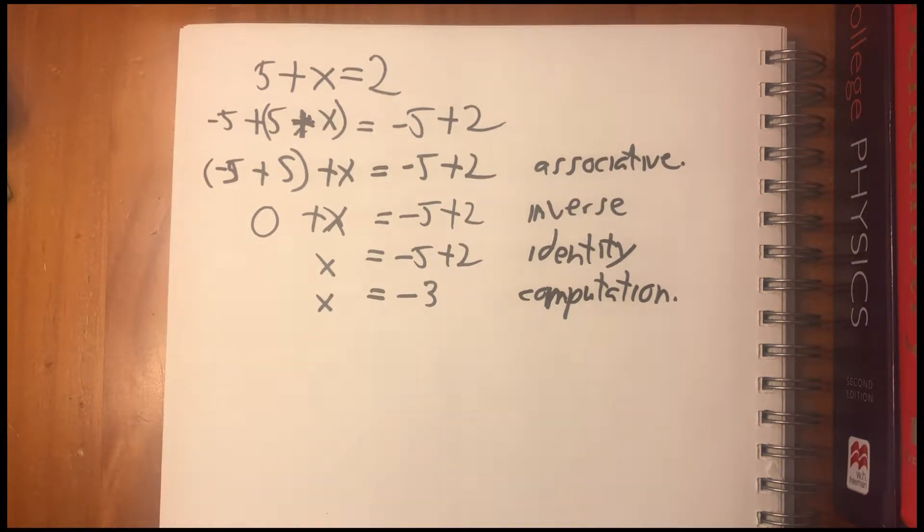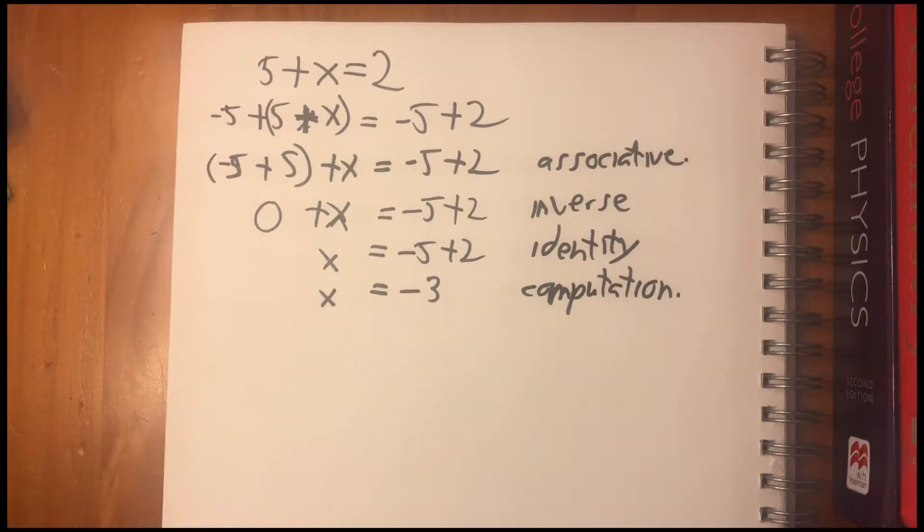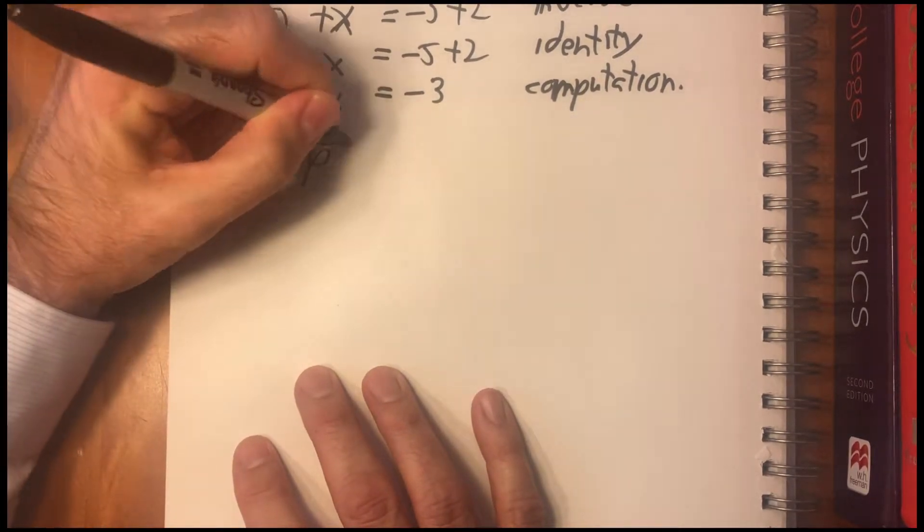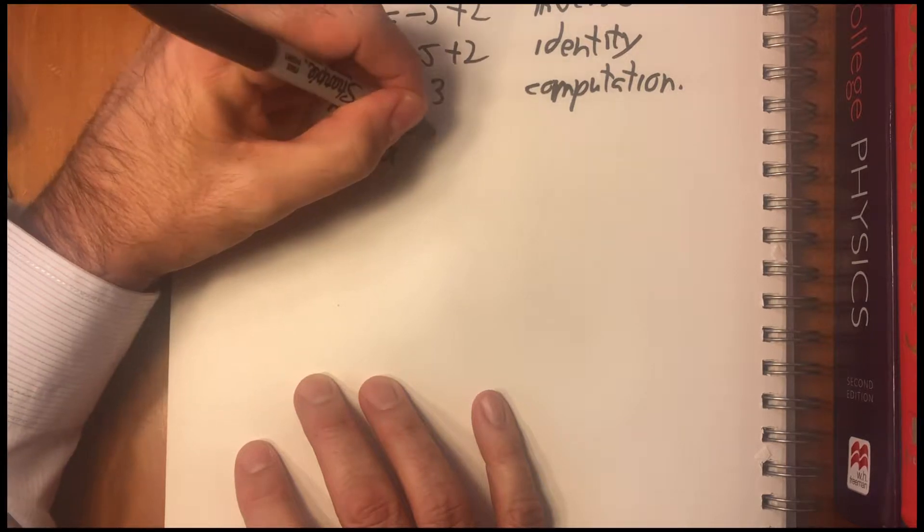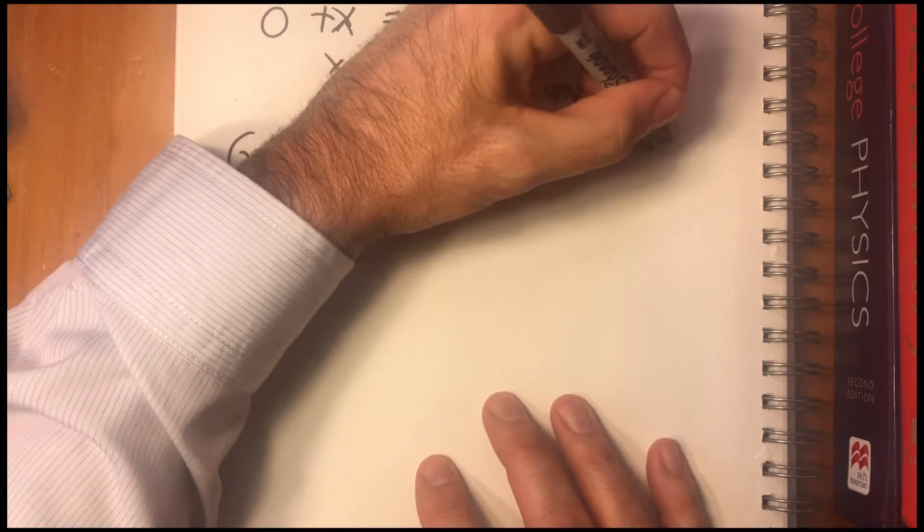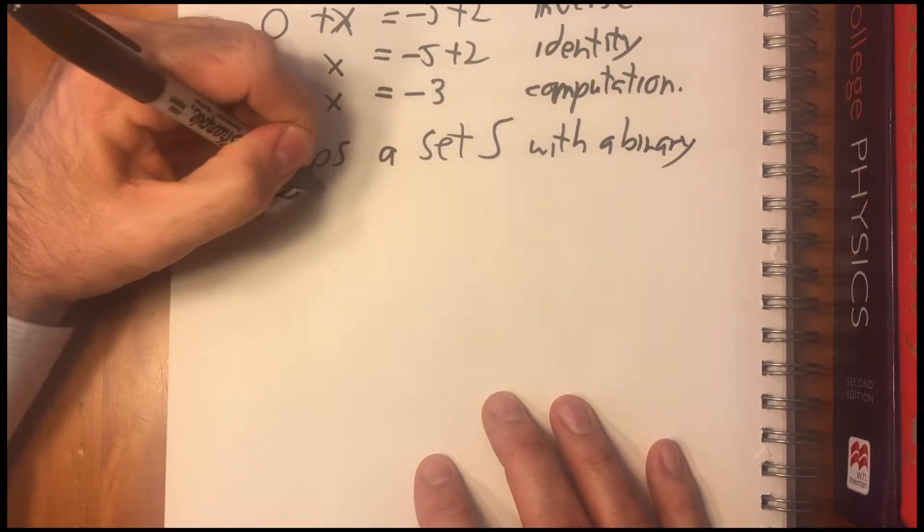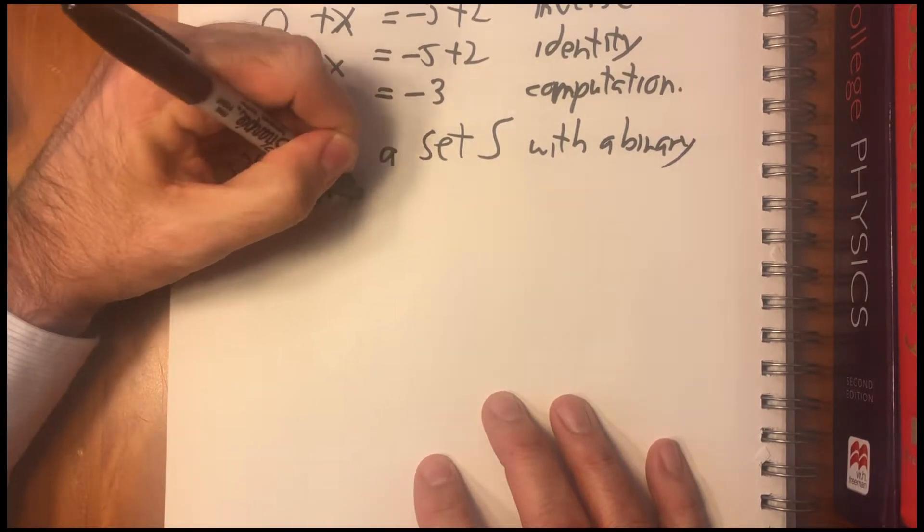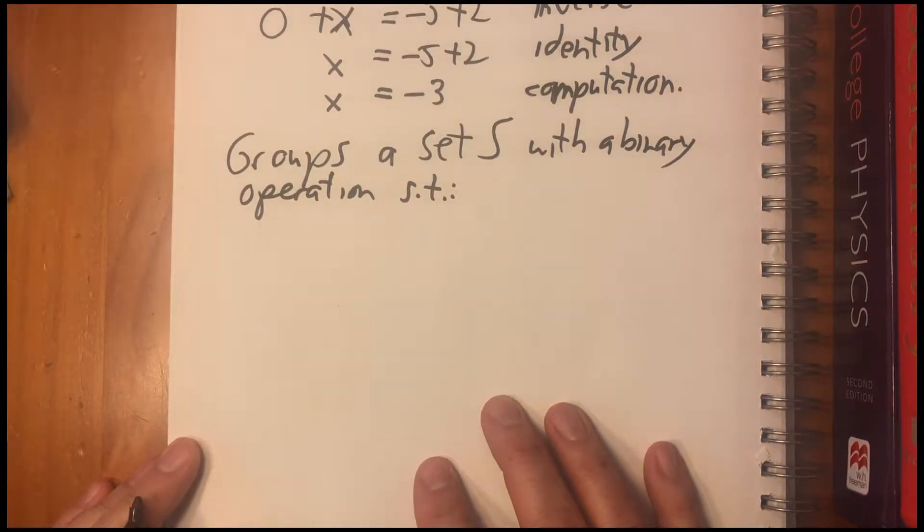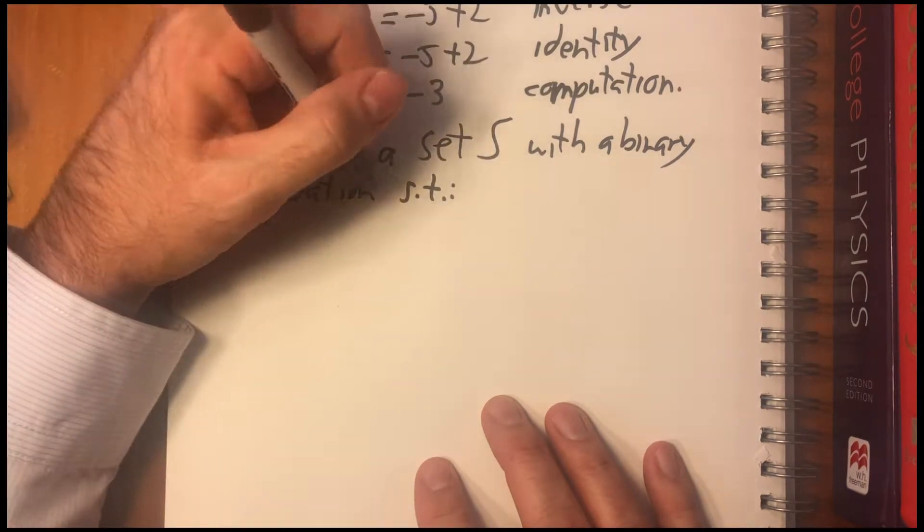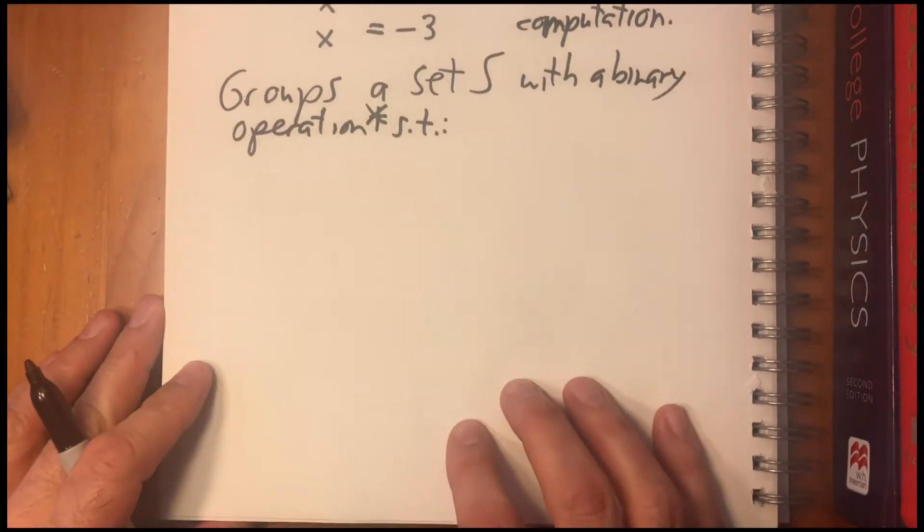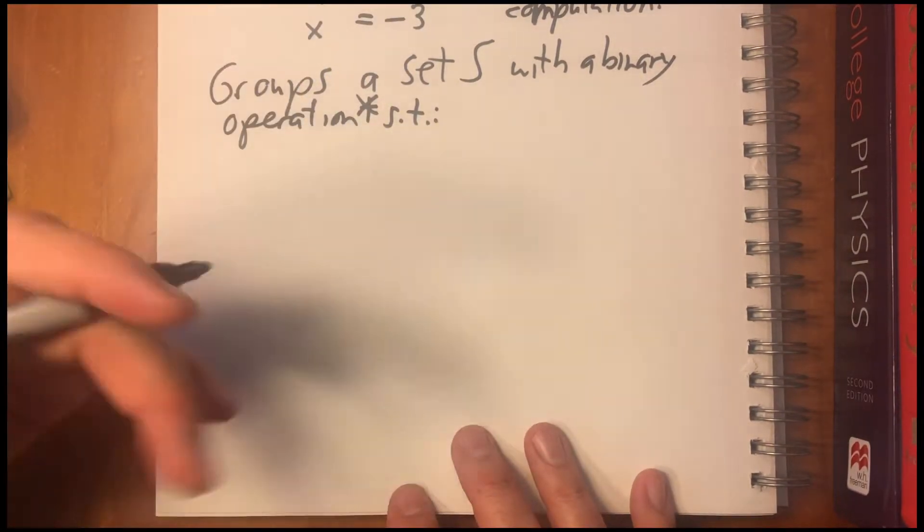So what they did after that is to abstract these rules for any set. So what a group is, they just basically defined a group based on what we just looked at. So groups are any set s with a binary operation such that the following is true. And we usually call, for now we're going to call the operation just an asterisk. Okay? Because it can be anything. Here it was pluses, but it doesn't have to be. It's any operation where these, the following things hold true.